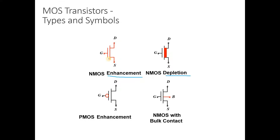This is called a depletion-type device. The symbolic representation shows three terminals: drain, gate, and source. One important point: why is drain at the top and source at the bottom? In NMOS, we are talking about N-type carriers or electrons. Source provides the electrons, so it is more negative, and drain accepts electrons, so it is more positive — that's why drain is at the top.